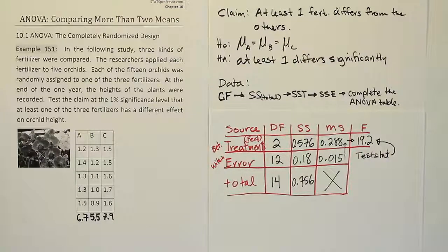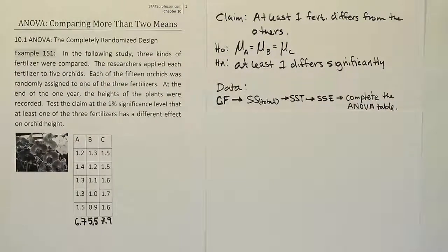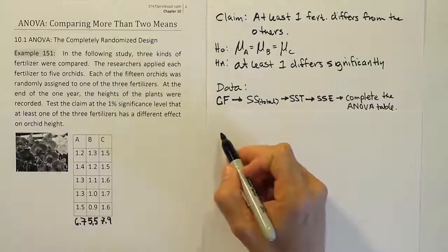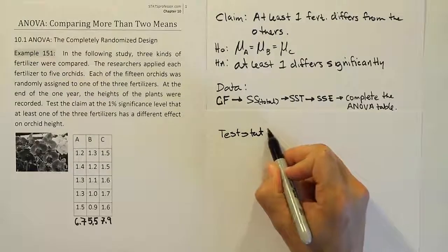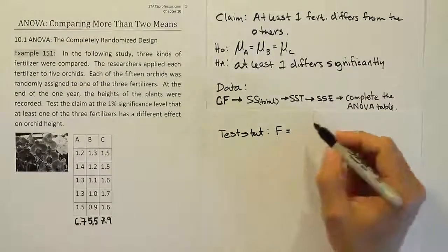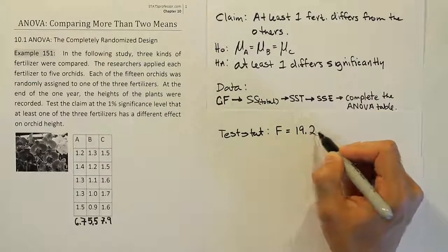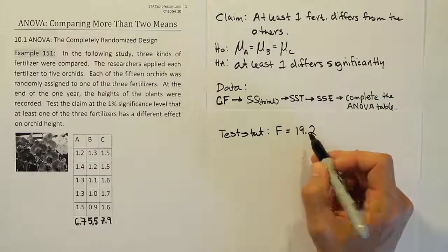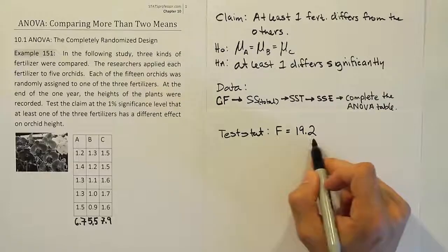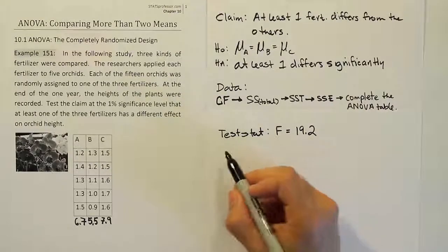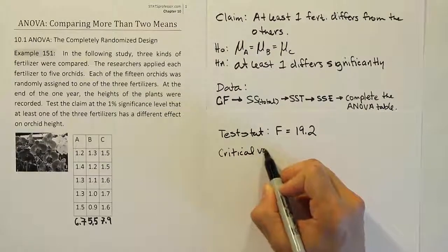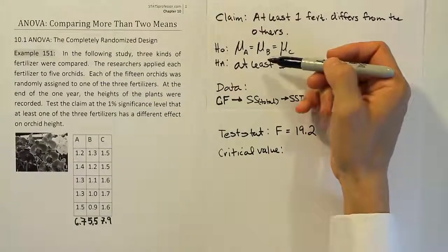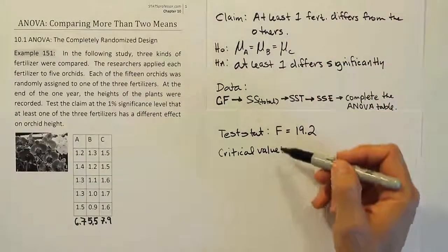Okay, so from the ANOVA table, what we see is that the test stat is equal to, and we saw it was pretty large, it was 19.2, right? That's what we found in the last step of our ANOVA table, that the test stat, the F value is 19.2. Now from here, we have to compare it to the critical value, the critical value. So this is normally our step 5, right? So we had step 1, 2, 3, 4, and 5.